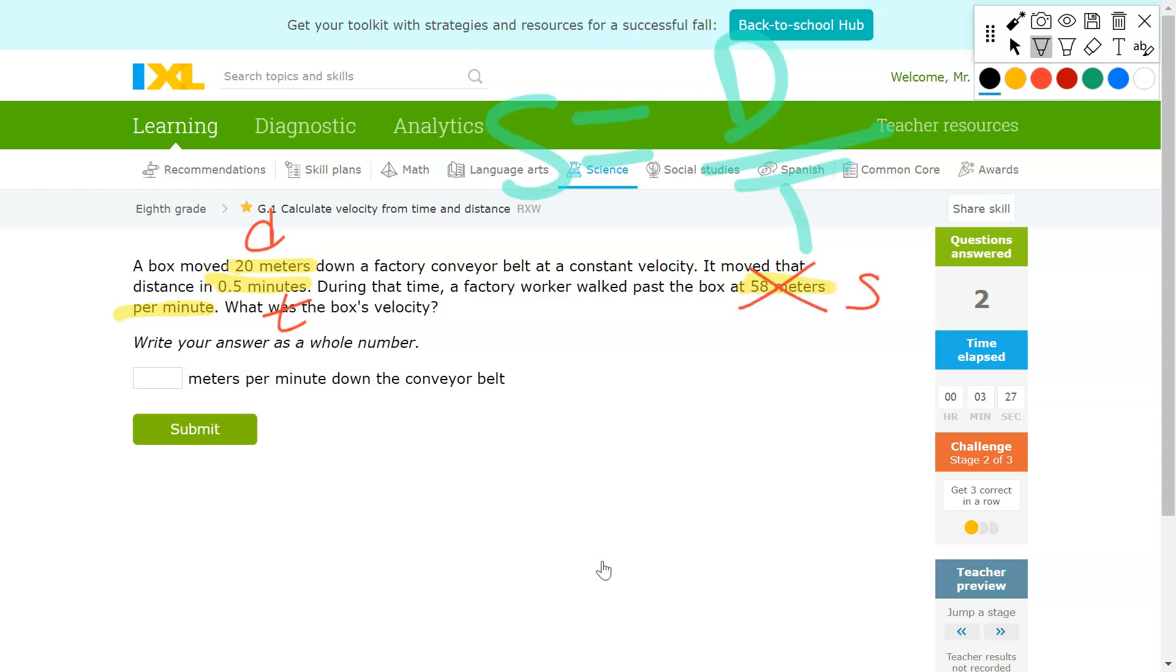We're going to use the other two to solve for the question. So speed equals 20 meters divided by 0.5 minutes. And your answer should equal 40 meters per minute.